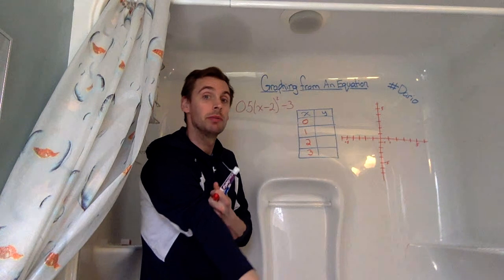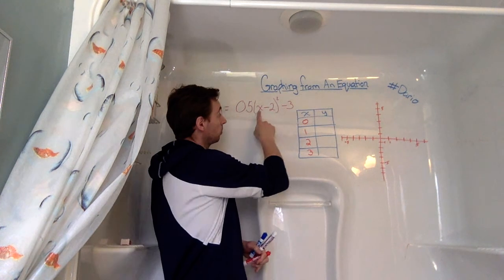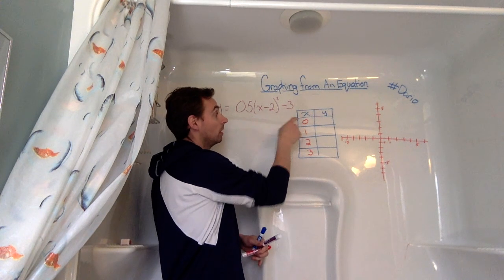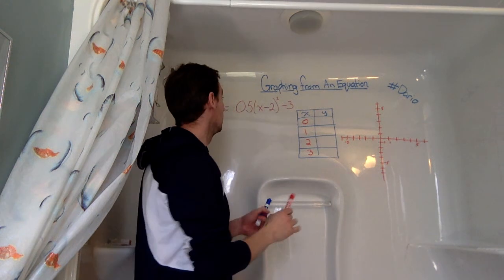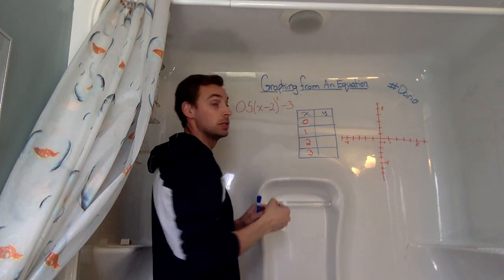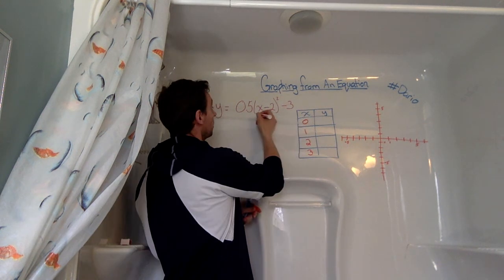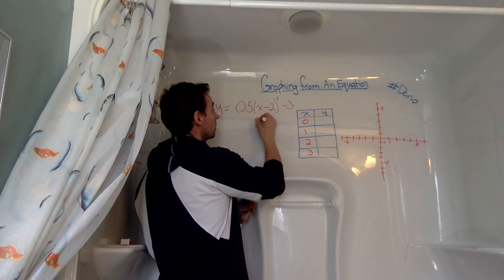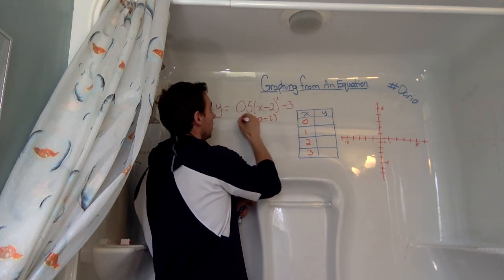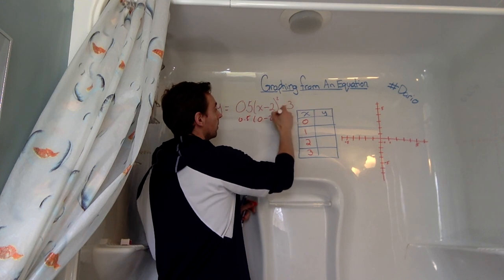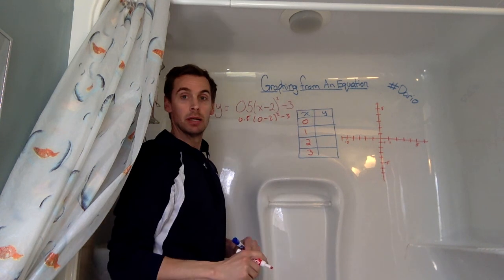Now what we do with this table of values is we're going to be using some substitution to replace this x value with whatever we designate as x. So I'm going to take my 0 here, and I'm going to replace it wherever I see an x. So I'm going to throw an x right in there, and I'm going to rewrite my equation here, but I'm going to keep my 0 there.